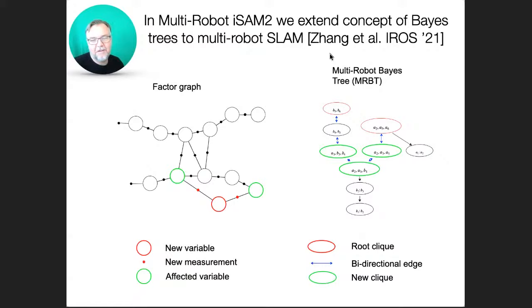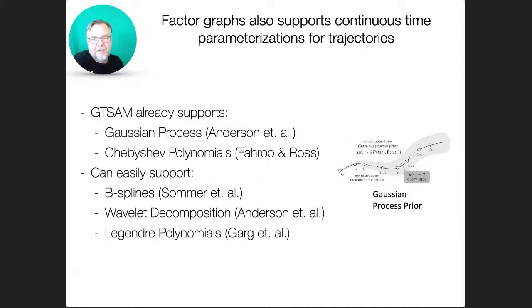One of my new students, Yetong Zhang, has worked at an internship at Facebook, on extending this Bayes tree work that Michael did to multi-robot scenarios. So he has created the multi-robot Bayes tree. But the other thing that is interesting is you can even think about continuous representations for trajectories. And so this is work that people in optimal control have been thinking about for a long time. GT-SAM supports Gaussian processes and Chebyshev polynomials since maybe a couple of weeks.